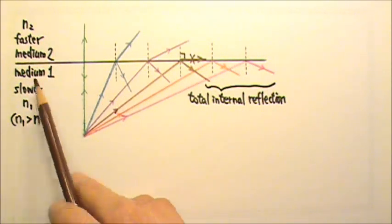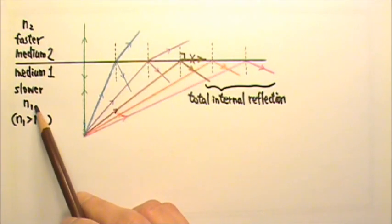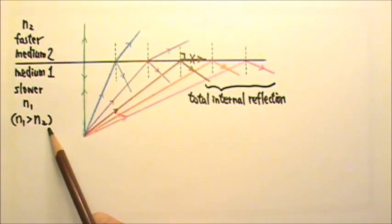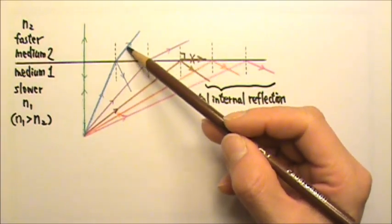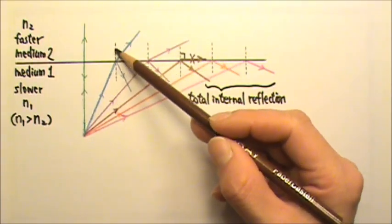Since light is slower in medium one, N1 is bigger than N2. When light goes from medium one to medium two, light speeds up and the angle gets bigger.